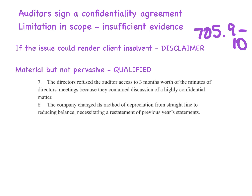In terms of the reference for the qualified opinion, that's ASA 705, paragraph 7, subparagraph B — because it's a scope limitation rather than a disagreement.